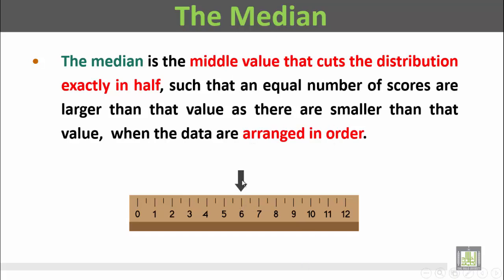For example, these are the values from 0 to 12. They are arranged from the smallest, 0, to the biggest, 12. The middle value, 6, is the median.